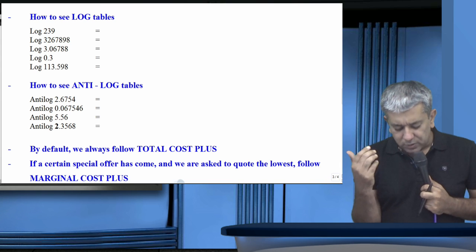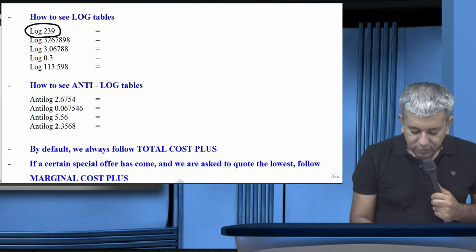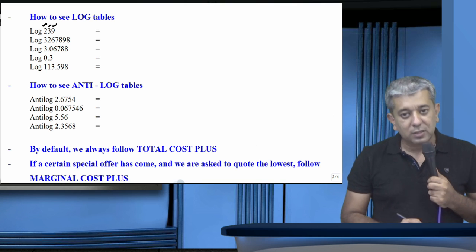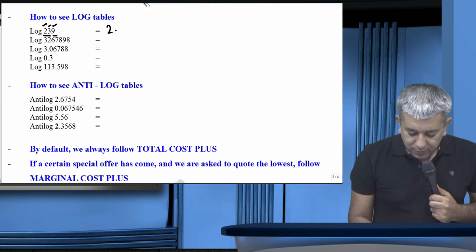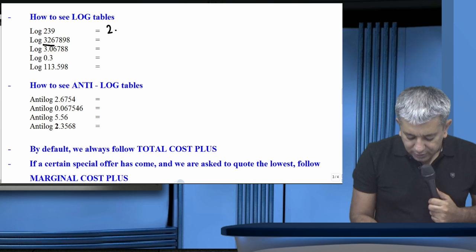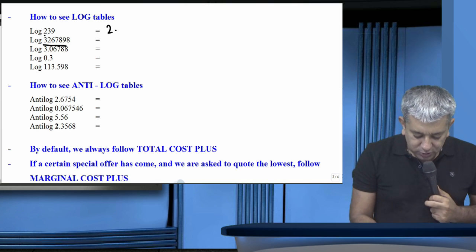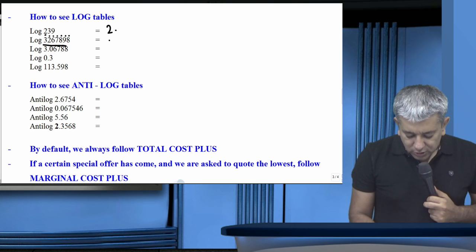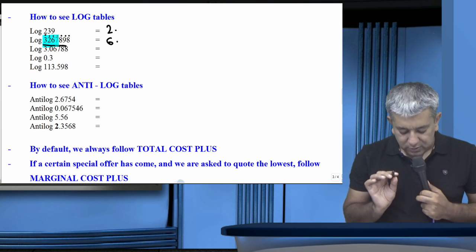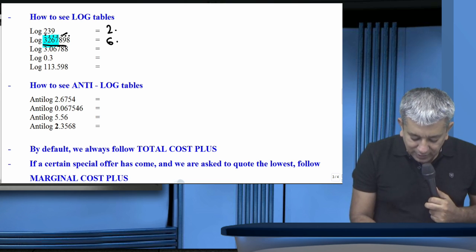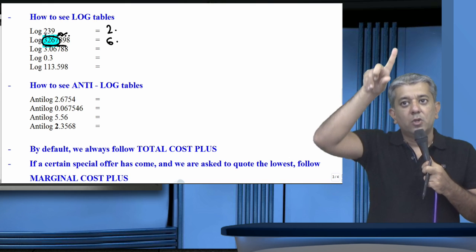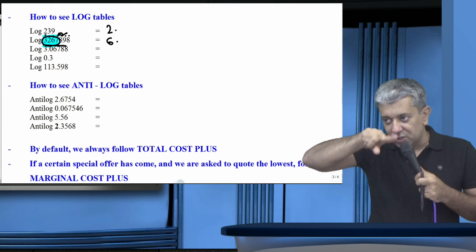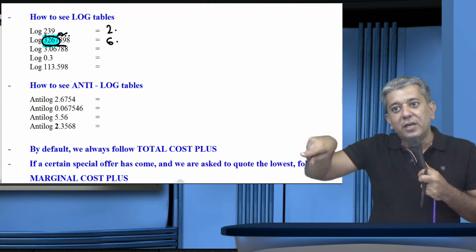How to read log tables — just one or two things to remember. For log of 239: count digits — there are 3 whole number digits, so characteristic = 3 − 1 = 2. Then see the log table for 23 against column 9. For a number like 3,267,898: count 7 digits, so characteristic = 7 − 1 = 6. Always use the first 4 significant digits — see log of 3268: row 32, column 6, then add mean difference for 8.